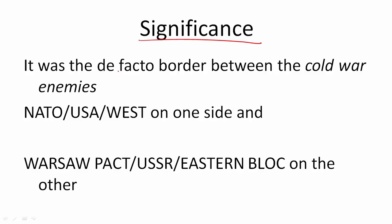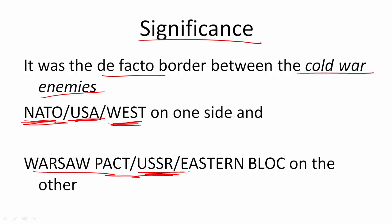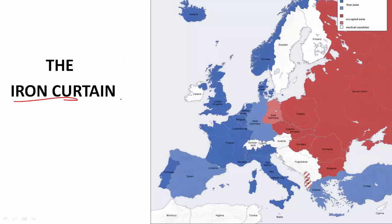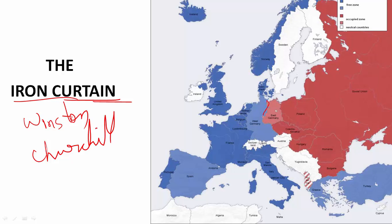The Berlin Wall was the de facto border between Cold War enemies. On one side was USA leading NATO and the western countries; on the other was USSR leading the Warsaw Pact and the eastern bloc. If you stood on the Berlin Wall you were literally standing on the border of the east bloc and the west bloc — the Iron Curtain proclaimed by Winston Churchill. This Iron Curtain separated East and West Europe, with iron fencing all along the German border.